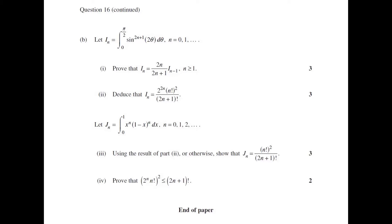So I'll just read through it. We're told that I_n is equal to the integral from 0 to π/2 of sin^(2n+1)(2θ) dθ, for n equals 0, 1, and so on. Part 1, we're asked to prove that I_n is equal to (2n)/(2n+1) times I_{n-1}, for n greater than or equal to 1 — so essentially we're being asked to prove a recurrence relationship. Then for Part 2, we're asked to deduce that I_n equals (2^(2n) · (n!)²) divided by (2n+1)!.